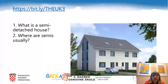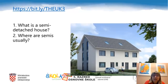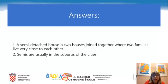Before watching the third video clip, let's have a look at the questions: What is a semi-detached house? Where are semis usually? Please copy the link bit.ly/the-UK3 into your browser and find the answers, then write them down in your notebook. A semi-detached house is two houses joined together where two families live very close to each other. Semis are usually in the suburbs of the cities.